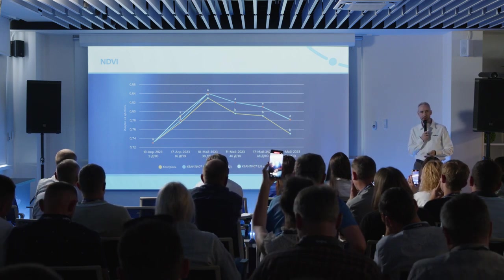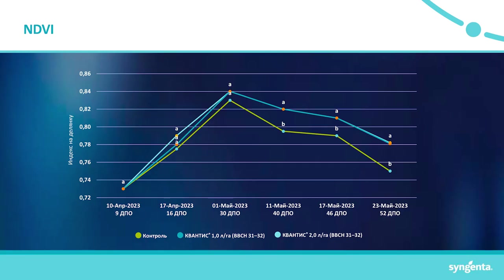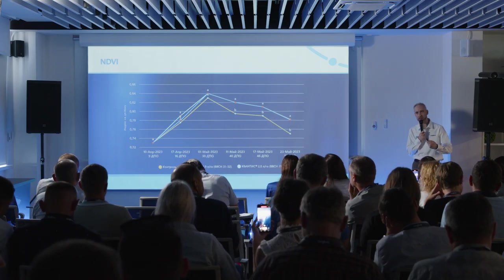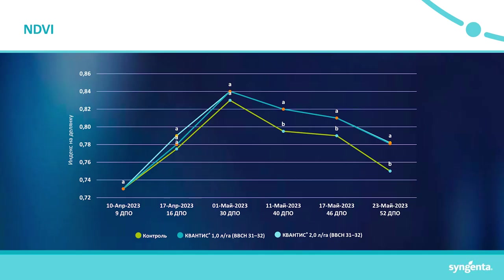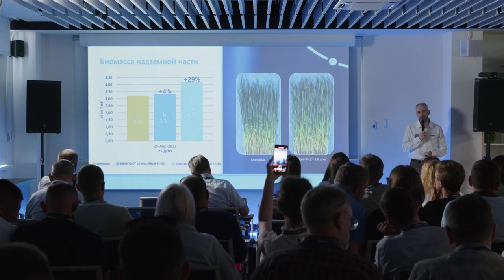On the third day after treatment, the amount of oxygen released in the Kvantis variant was 8% less, indicating that the enzyme responsible for breaking down hydrogen peroxide — catalase — was more active. We can also observe color differences visually, but to express this in numbers we use multispectral cameras that calculate vegetation indices, in particular the well-known NDVI — the reflection of sunlight from leaf surfaces — through which we can understand how active the chloroplasts are and how actively photosynthesis is occurring. This graph shows that the control (green) was inferior to both Kvantis variants (1 l and 2 l) in photosynthetic activity.